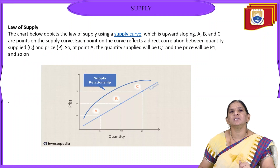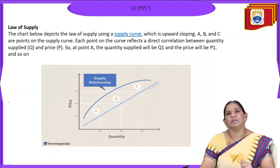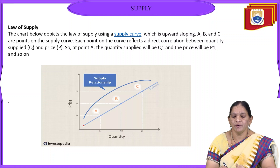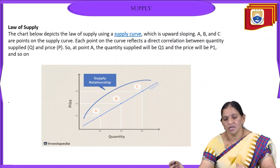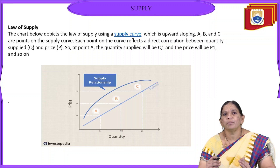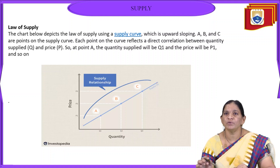Now we will see the law of supply through the chart below. In the supply curve, we can identify that it slopes upwards. When the price increases, the supply will also increase. There is a direct relationship between the price of goods and the quantity supplied, shown by an upward-sloping curve.